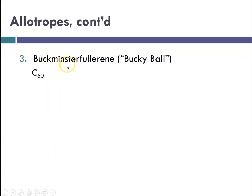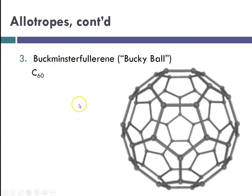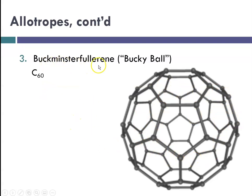A third allotrope we talk about is Buckminster fullerenes, or buckyballs as they're sometimes called. These have a funny shape — they look like soccer balls. This one is a C60 example, but you can have ones with many more carbons. They're named after Buckminster Fuller, who was known for geodesic domes, and they're fondly referred to as buckyballs, which stands for Buckminster fullerenes.